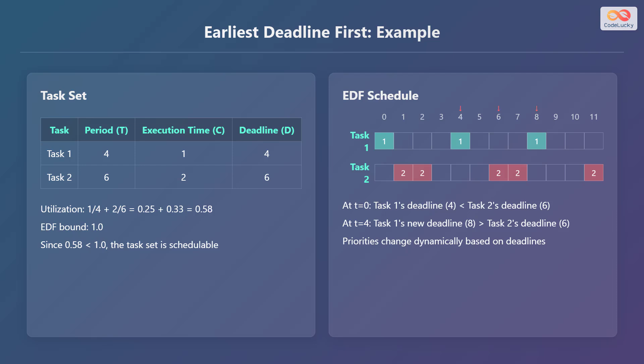At time 0, Task 1's deadline of 4 is earlier than Task 2's deadline of 6. At time 4, Task 1's new deadline of 8 is later than Task 2's deadline of 6. As you can see, priorities change dynamically based on the deadlines.